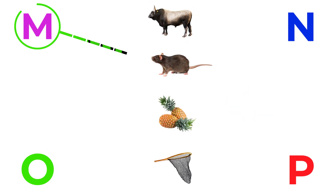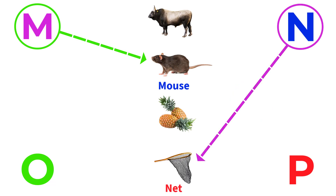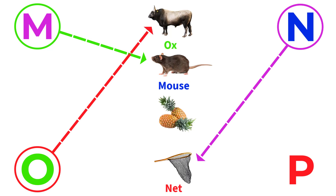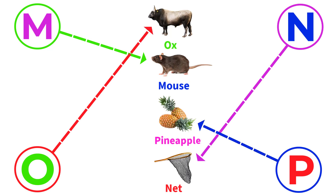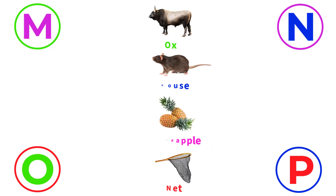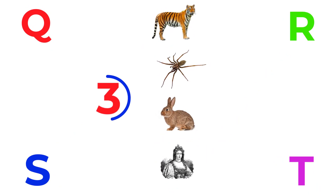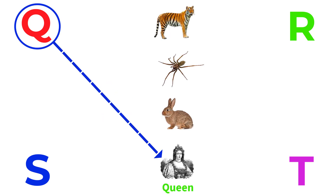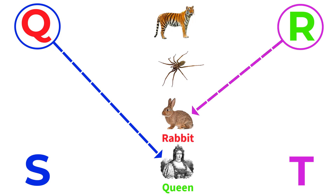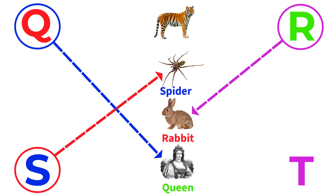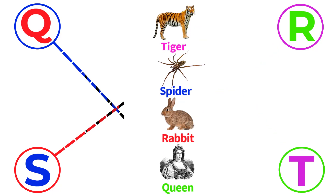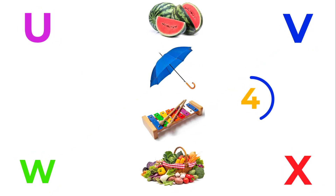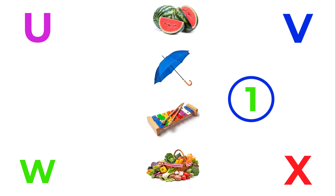M for mouse, N for net, O for ox, P for pineapple, Q for queen, R for rabbit, S for spider, T for tiger.